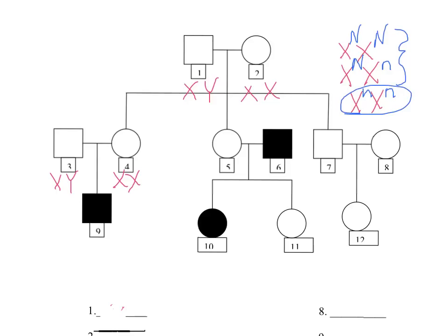And so if you look at the pedigree chart, number 10 is a female that is shaded in, which would indicate that she was a colorblind female. So number 10's genotype must be X little n, X little n.